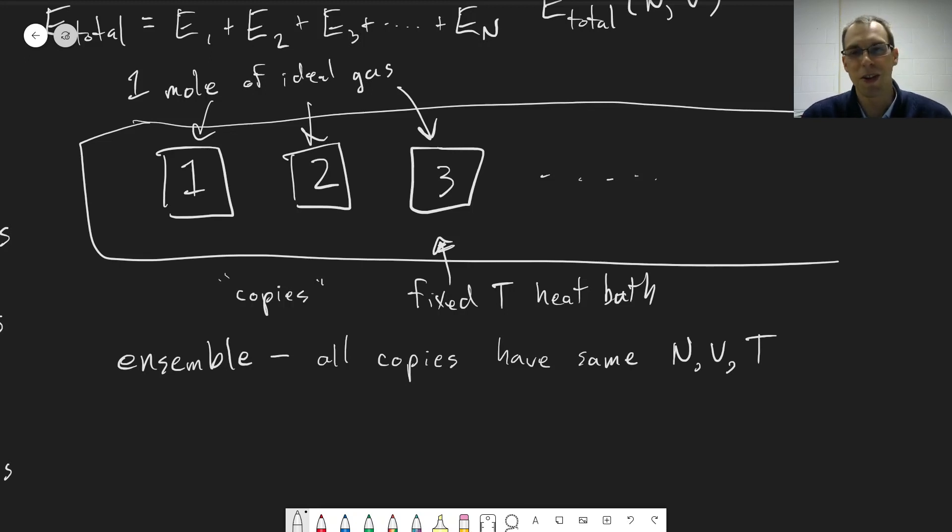But what we're interested in are what are the statistical properties, if we consider a very large number of these copies of states. Right? For each one, we can sort of look at what's going on individually. But what we're really interested in are what are the statistical properties. As we look at this large ensemble of states.